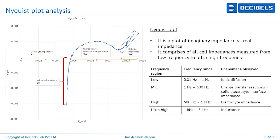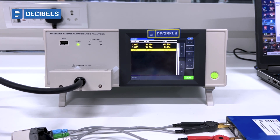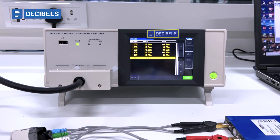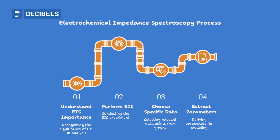To develop frequency domain models, it is very important to understand electrochemical impedance spectroscopy (EIS). You will learn the importance of EIS, how to perform EIS, how to choose specific data from EIS graphs, and how to extract parameters for frequency domain modeling. You will then develop the models in MATLAB and Simulink, building new circuits and clearly seeing how model fidelity improves from DC characterization RC pairs to EIS-based RC pairs.